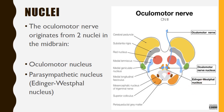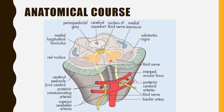From the Edinger-Westphal nucleus, parasympathetic fibers emerge and run along with the main motor fibers — the general somatic efferent fibers — and also pass between the crura along with the main motor fibers. The oculomotor nerve thus emerges from the main motor nucleus ventral to the cerebral aqueduct and travels anteriorly through the brain stem.